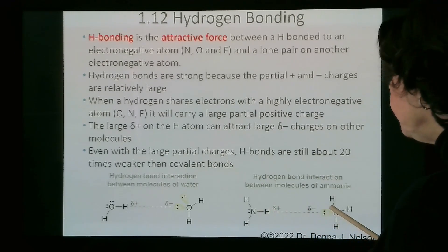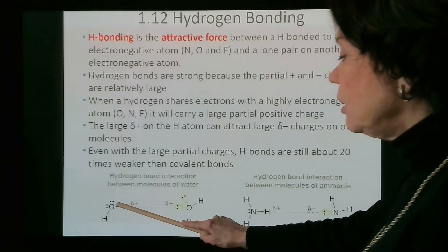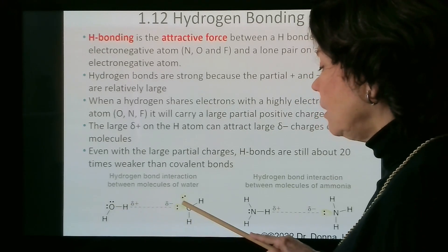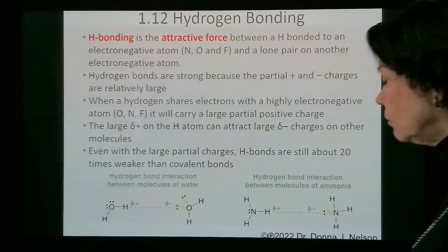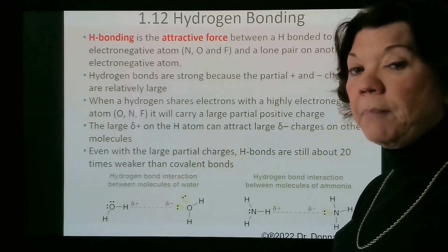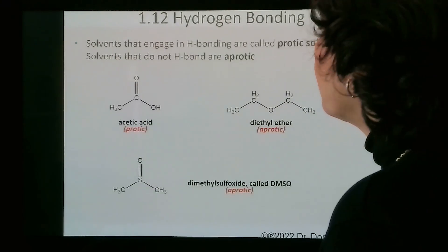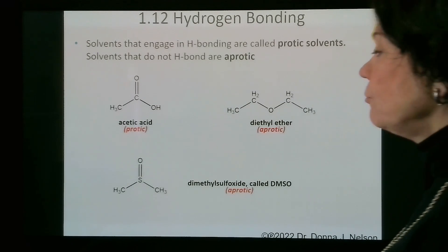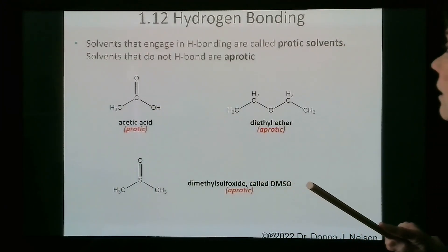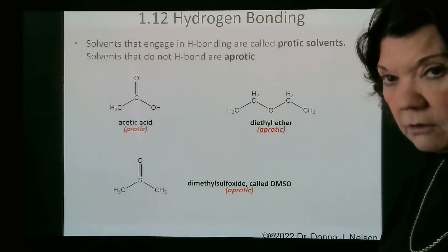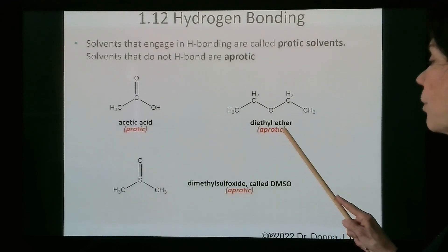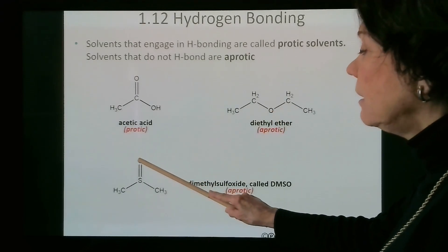Hydrogen bonding is depicted between two molecules of ammonia and between two molecules of water. When it takes place between two molecules of the same compound, it can impact the boiling point of those compounds. Solvents that engage in hydrogen bonding are called protic because they have protons attached to highly electronegative atoms. If they do not have such protons, they cannot participate in hydrogen bonding as a proton donor, and so they are called aprotic.